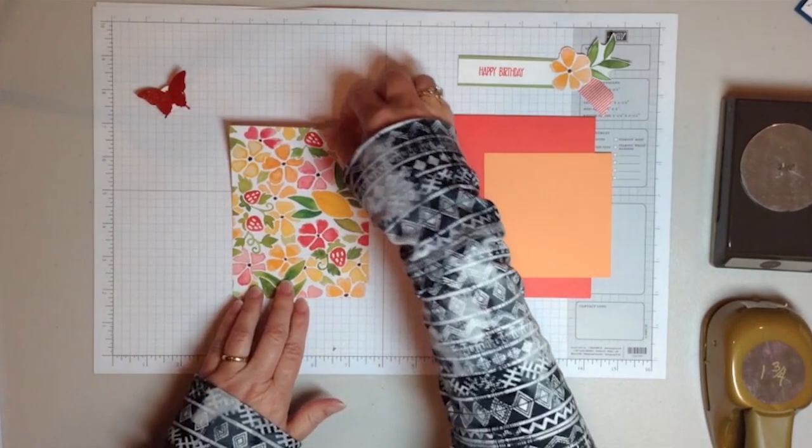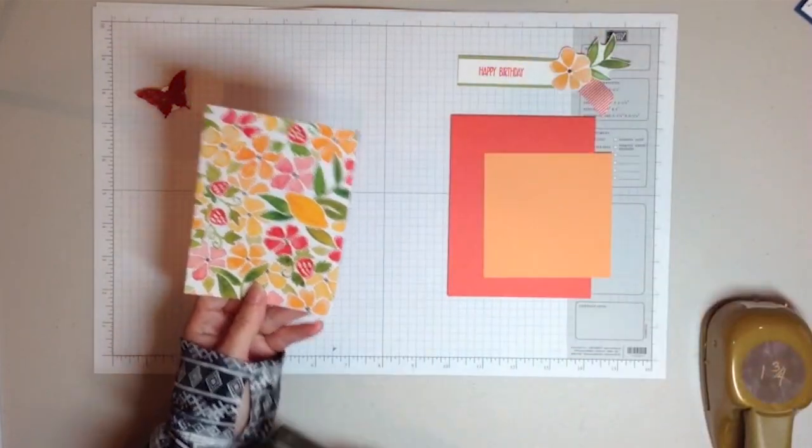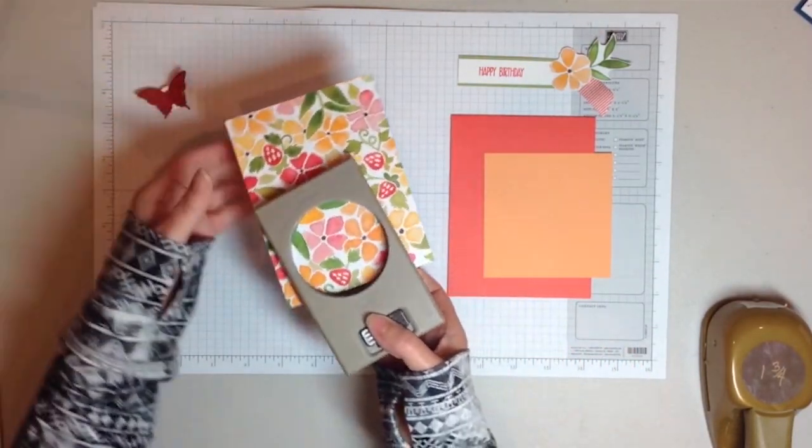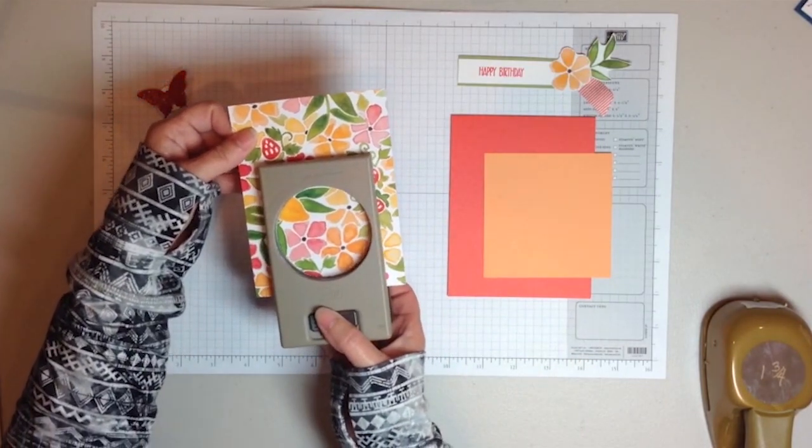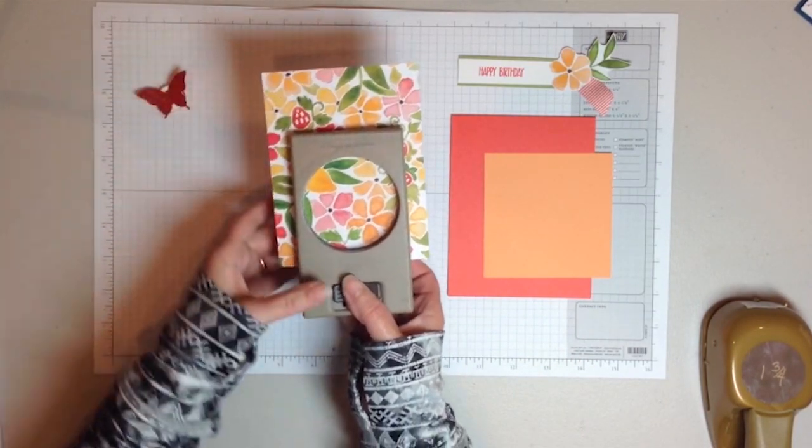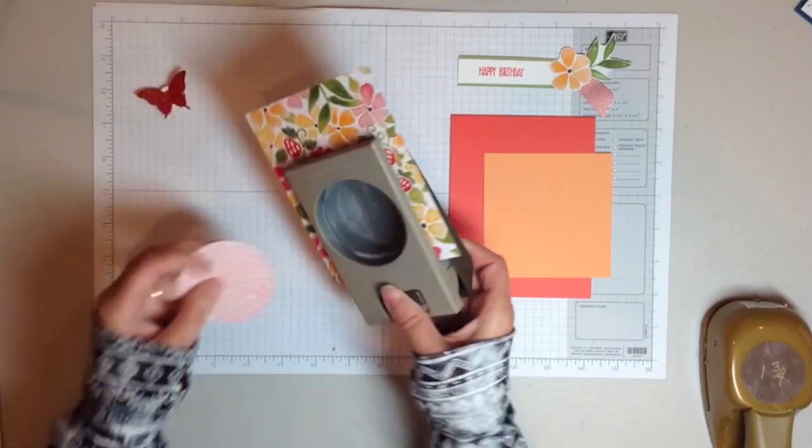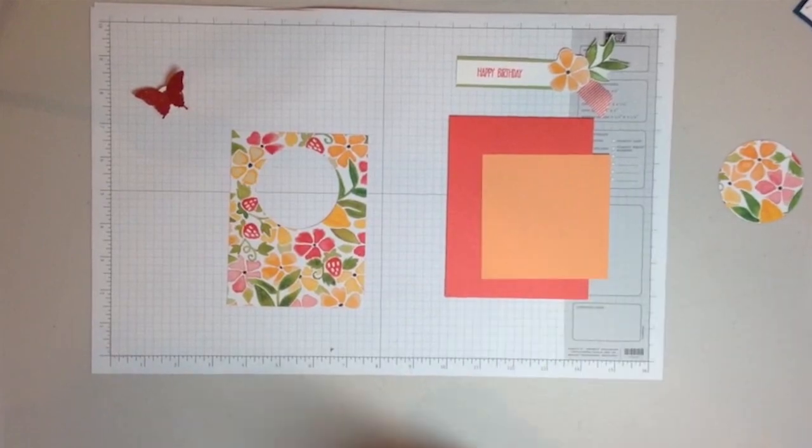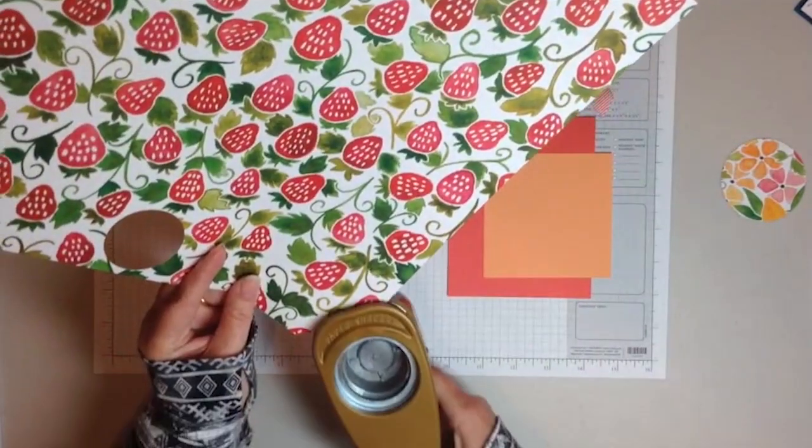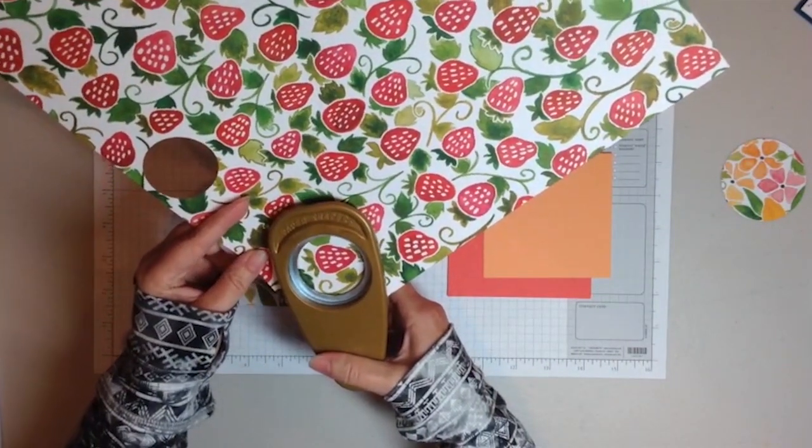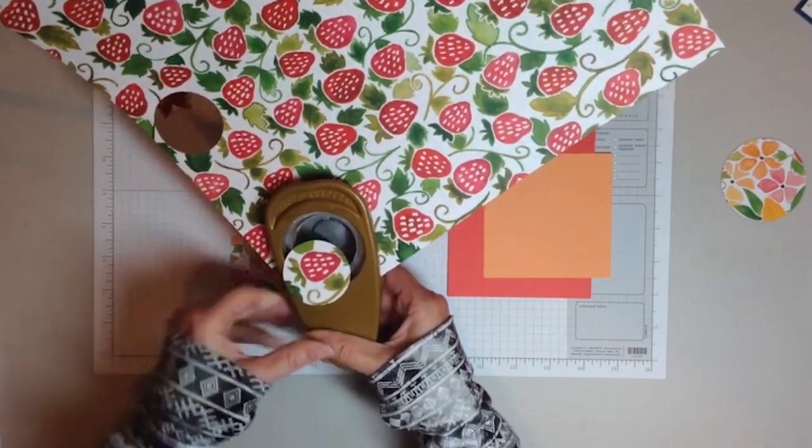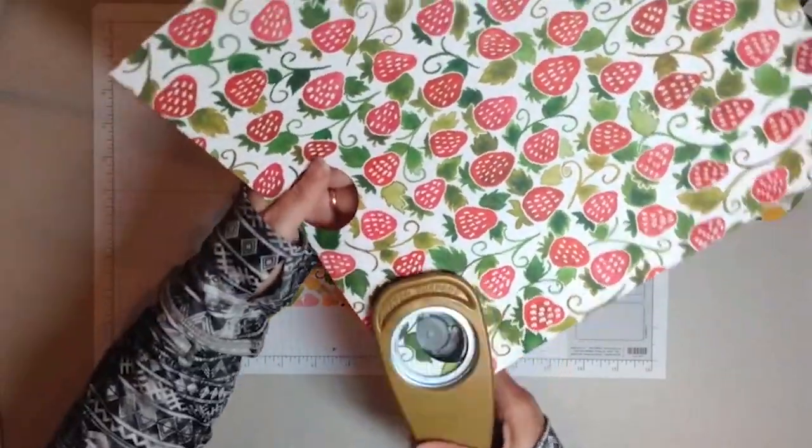I'm going to demonstrate how to use the punches to make the card. It's very similar. Just use the two and a half inch punch, slide that all the way in. Punch that and then use the one and three quarter punch.